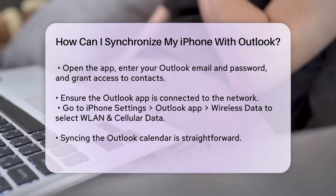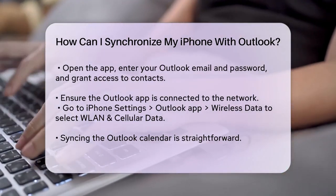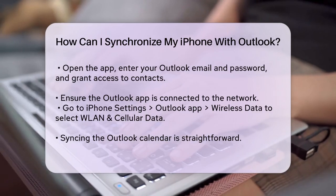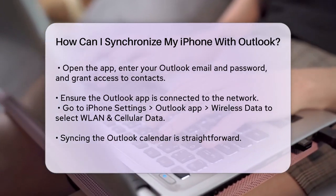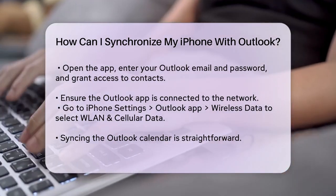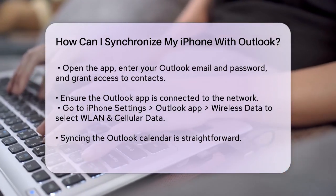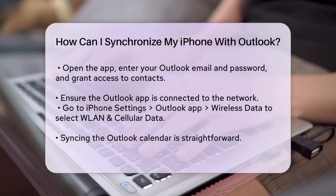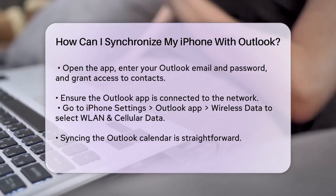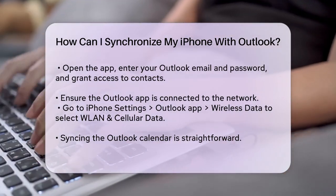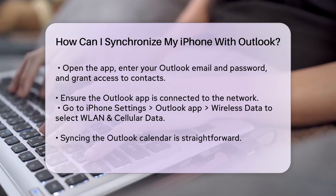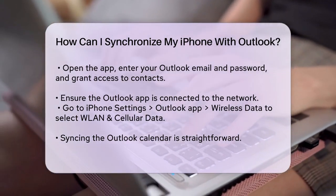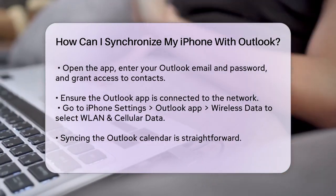If you prefer to set it up through your iPhone Settings, open the Settings app, scroll down to Accounts, select Add Account, and choose Outlook.com. Enter your Outlook username and password, and make sure to toggle on the option to sync your calendars. Save the changes and your calendar will be synced.